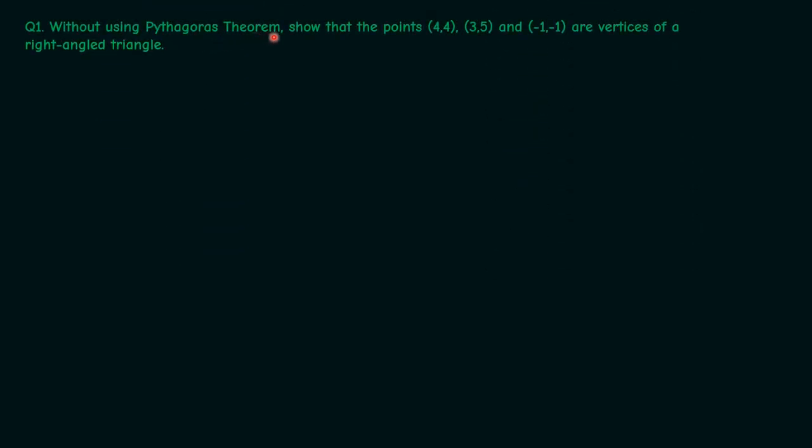Without using Pythagoras theorem, show that the points (4,4), (3,5), and (–1,–1) are vertices of a right angle triangle. So we are given 3 points: A(4,4), B(3,5), and C(–1,–1). Now we have to show that these form a right angle triangle.